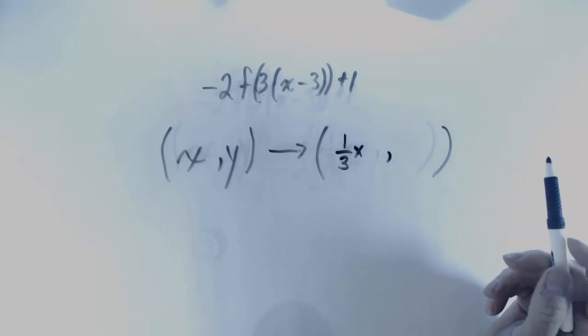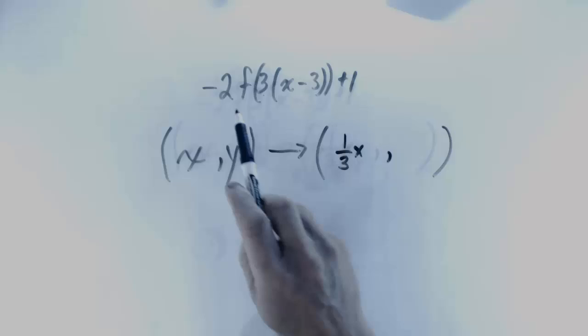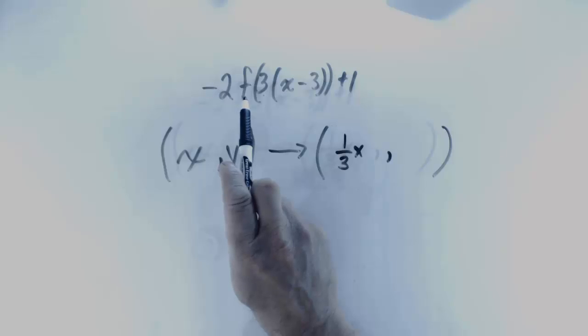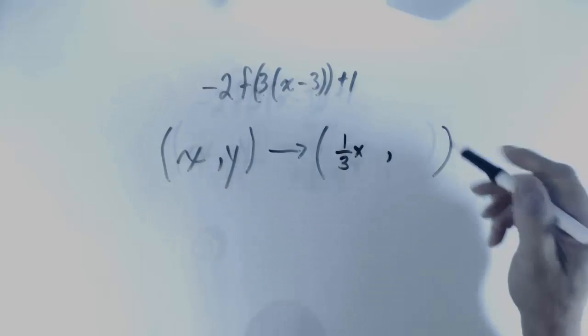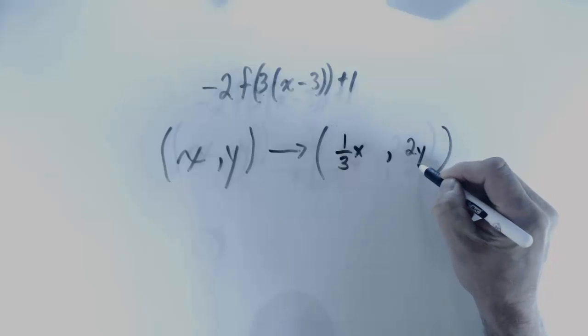Now looking at any stretches or squishes for y, I can see that there is a 2 being multiplied by whatever comes out of the function. So in other words, the y coordinate is going to be double what it was before. So this is going to be a 2y.